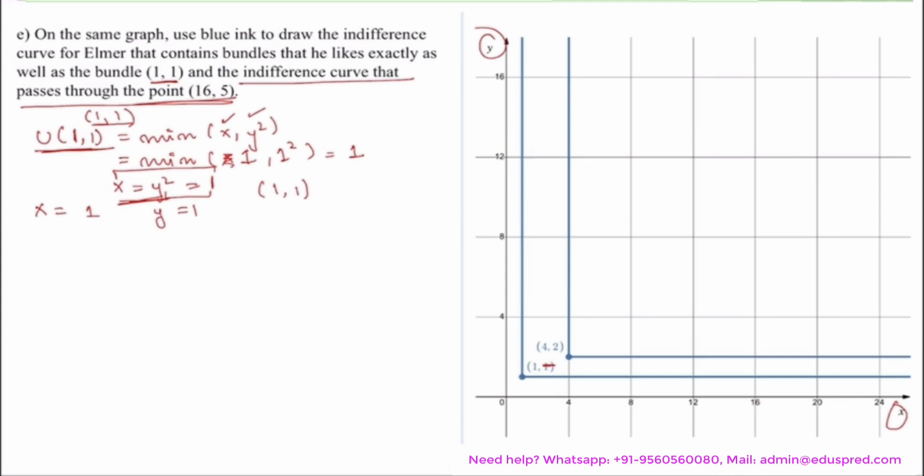But note that things are not always so simple that you simply just plot the given point which is (1,1) here and draw parallel lines. It might be the case that the given point to you is not a kink point which happens in the next case. Suppose you have a point (16,5).